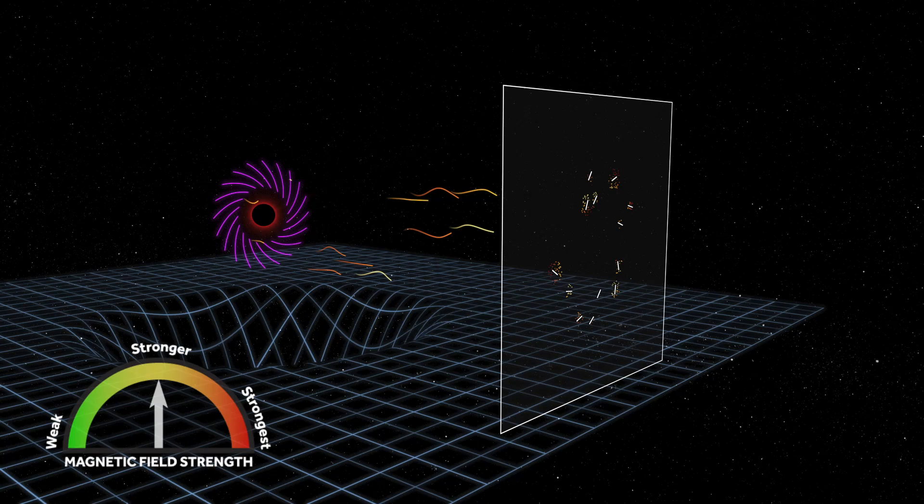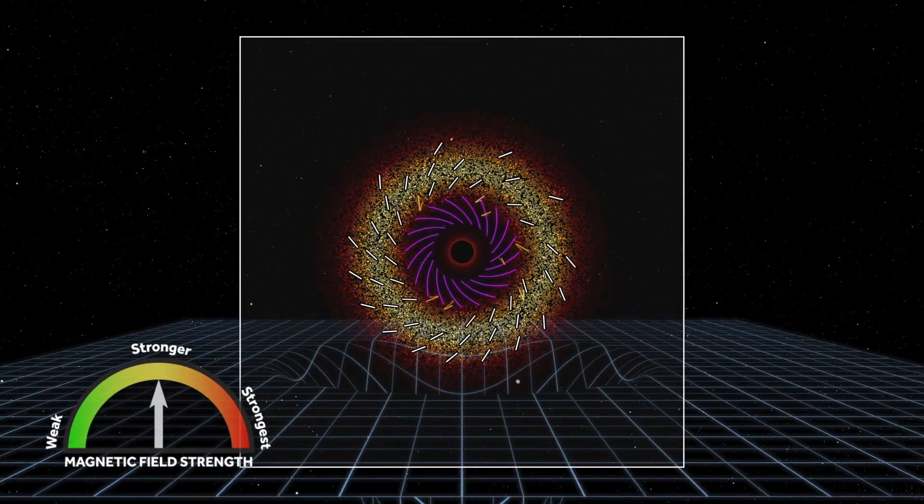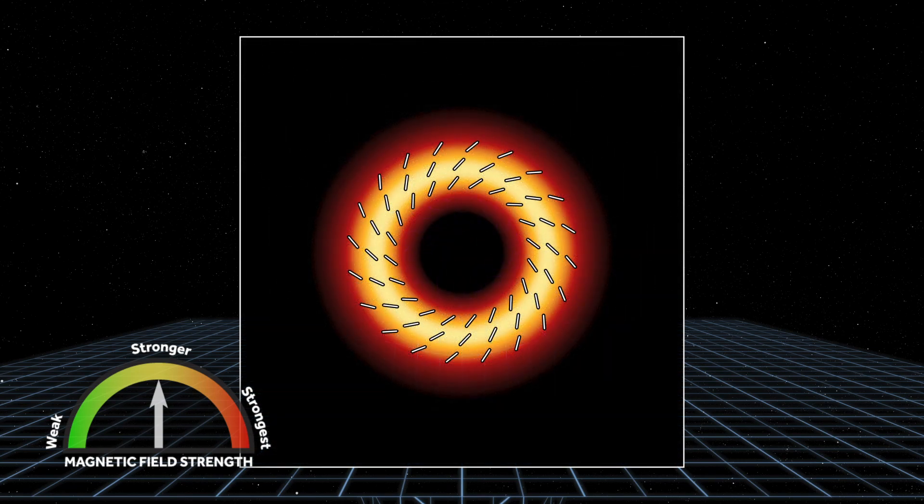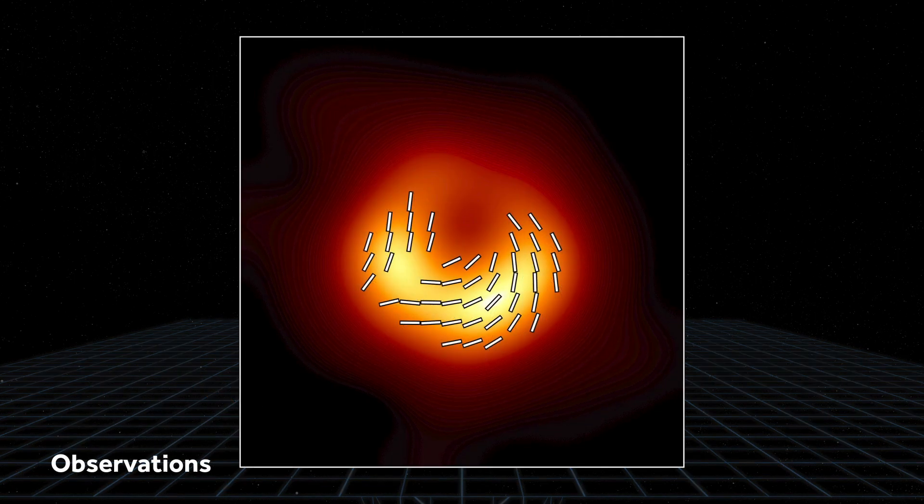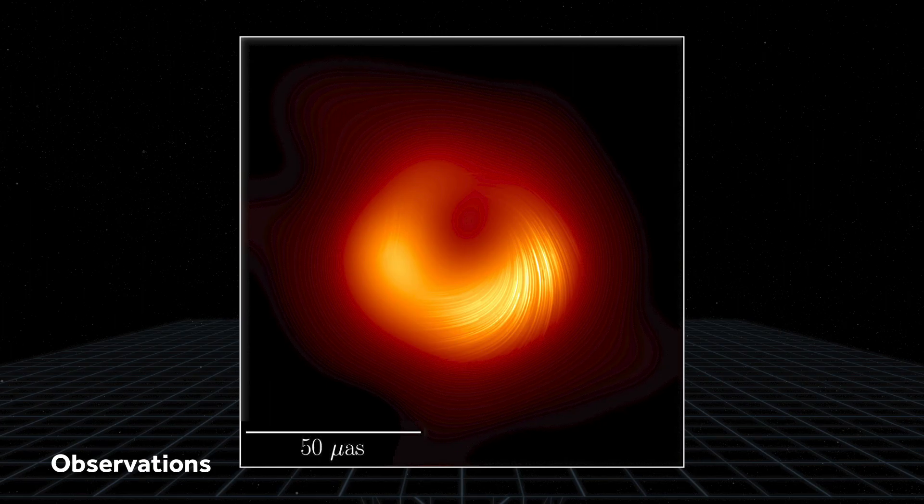While in reality many factors might affect the polarization of light, this intermediate case roughly resembles the Event Horizon Telescope's observations. By analyzing these tick marks, we can learn about the geometry and strength of the mysterious magnetic fields that surround black holes.